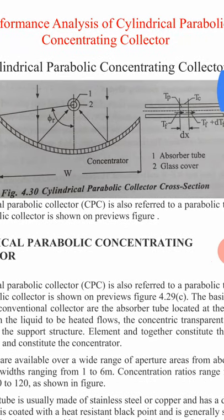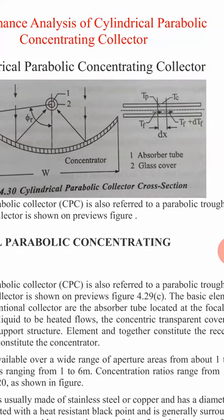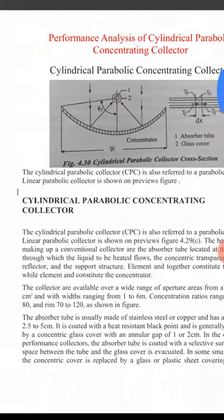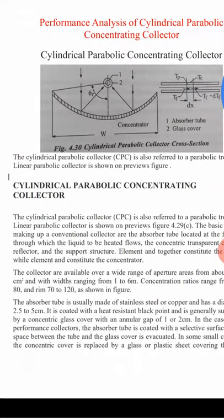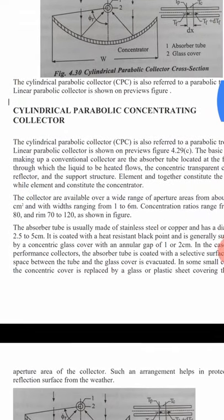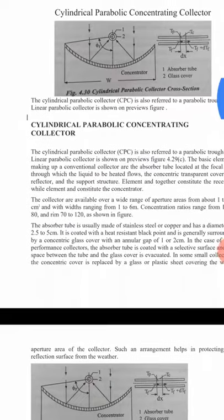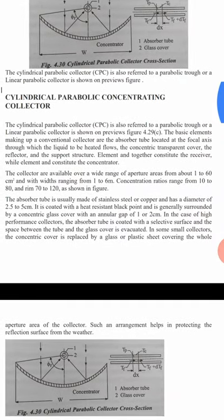The notations TF, TP, TC and delta X represent the temperature of the fluid, temperature of the plate, temperature of the collector, and delta X is the distance between the collector elements. This gives us a cross-sectional representation.